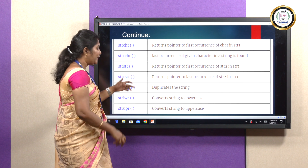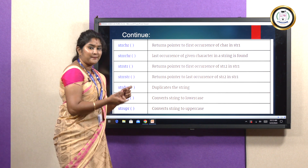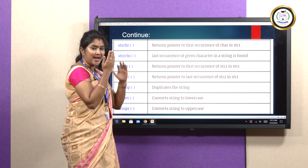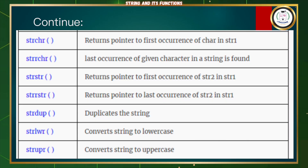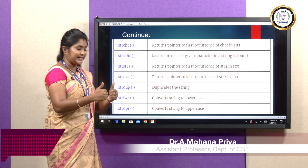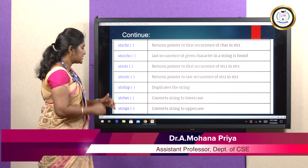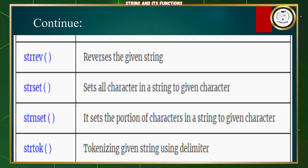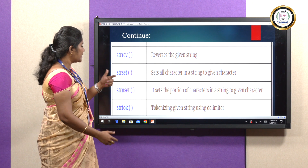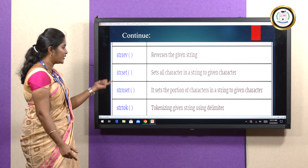strdup duplicates the string — it creates another copy from one string to another. strlwr converts a given string into lowercase letters. strupr converts the given string into uppercase letters. strrev is used to reverse the given string. strset sets all characters in a string to a given character. strnset sets a portion of characters in a string to a given character. strtok tokenizes the given string using a delimiter.